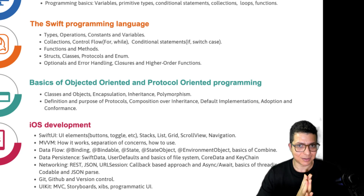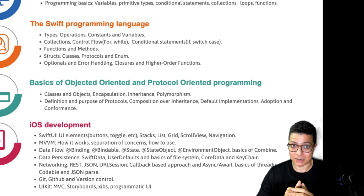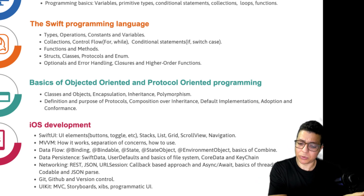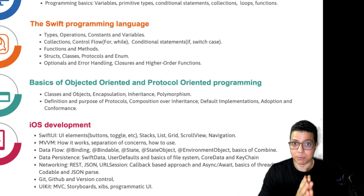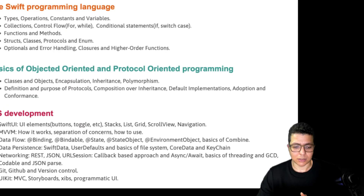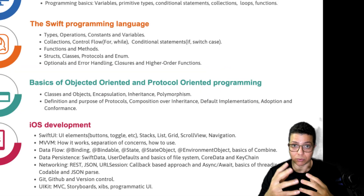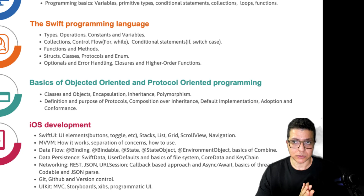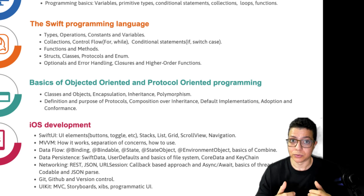Next we have networking. Networking is a big piece of this puzzle — it's really important that you learn how to work with APIs and make API calls. You should learn about the general idea of REST, JSON (JavaScript Object Notation), and URLSession, which is the Apple framework for making API calls. For how to make an API call, learn both the callback-based approach and async/await, because you will use both for sure. Also learn the basics of threading in GCD — Grand Central Dispatch, the Apple framework that manages threads — plus Codable and JSON parsing, so you can get a JSON response and parse it as a Swift object.